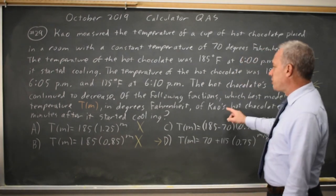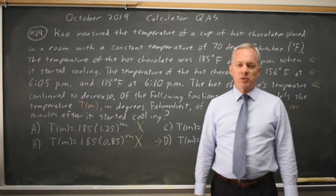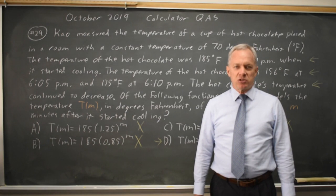So choice D matches the equation for all three temperatures we have been given. That is the correct answer. They asked which best models the temperature in degrees Fahrenheit, and we modeled it within well under one degree, so choice D makes sense and the others are clearly incorrect.